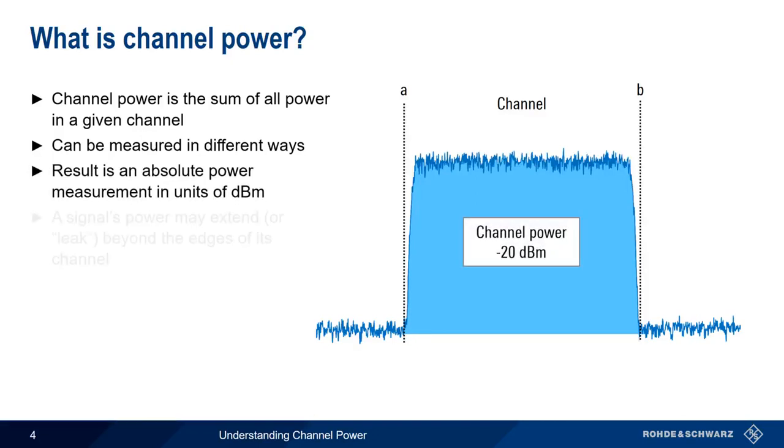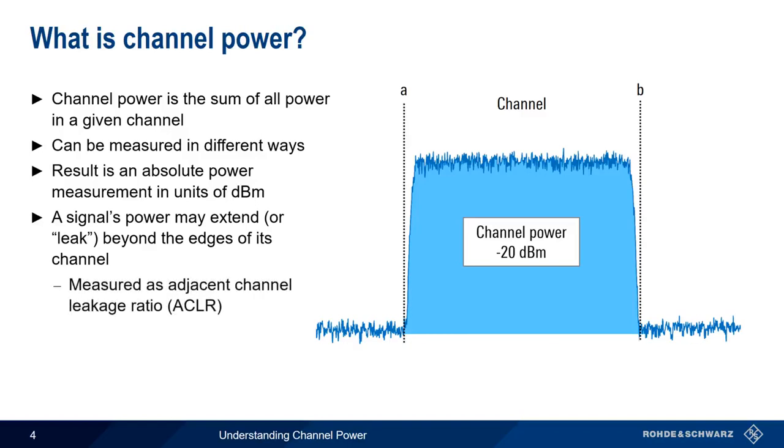Note that in some cases, a signal's power may extend or leak beyond the edges of a channel. The measurement of this leakage, or energy outside of the channel, is called ACLR, or Adjacent Channel Leakage Ratio. ACLR will be covered in a separate presentation.